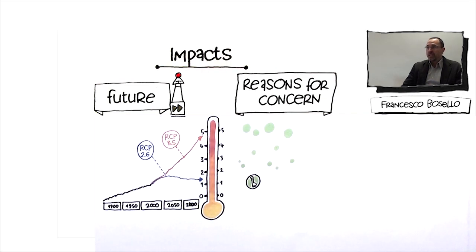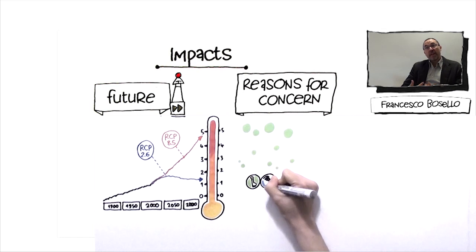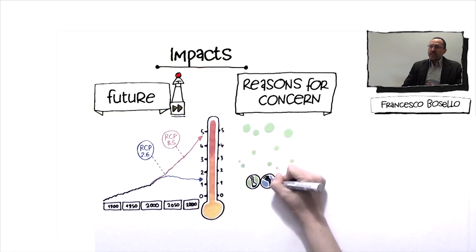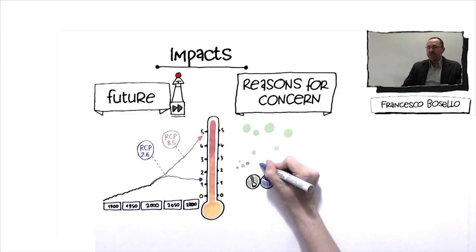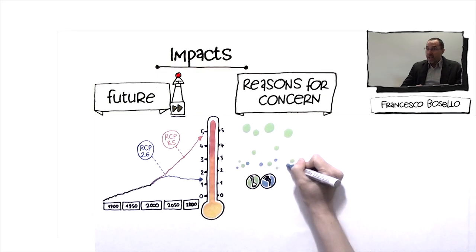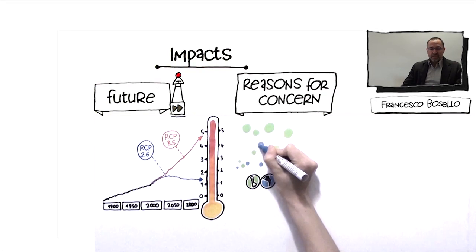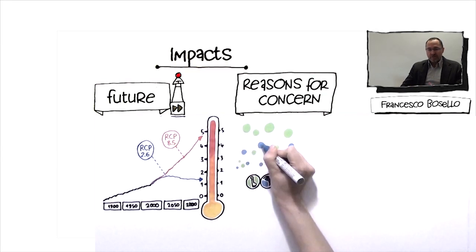Another one is related to change in frequency and intensity of extreme events. This can be extreme floods, extreme droughts, extreme precipitation. All these facts are very concerning because they influence negatively health, energy provision, and our infrastructure.